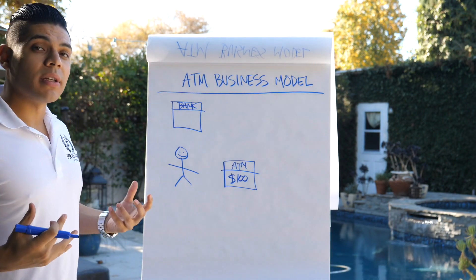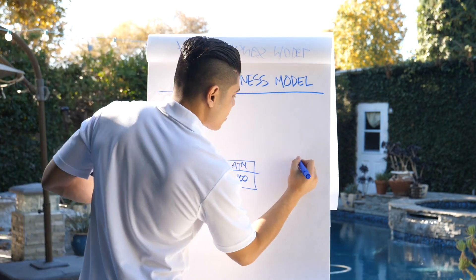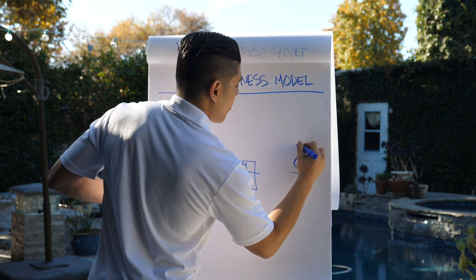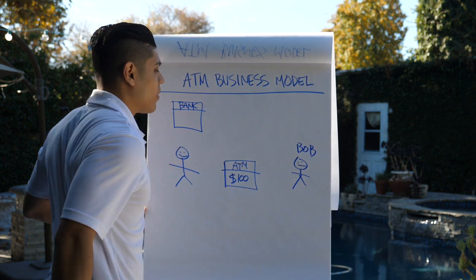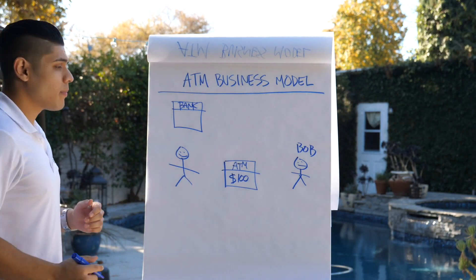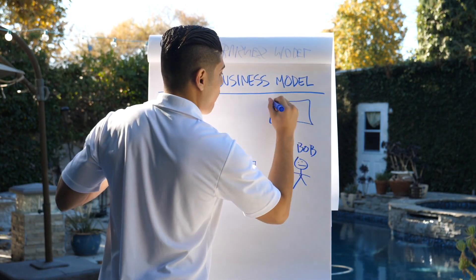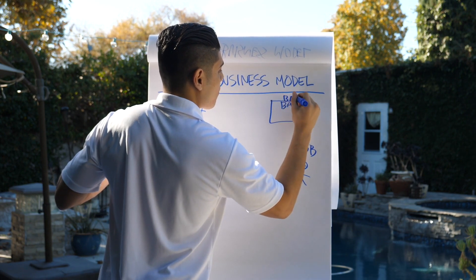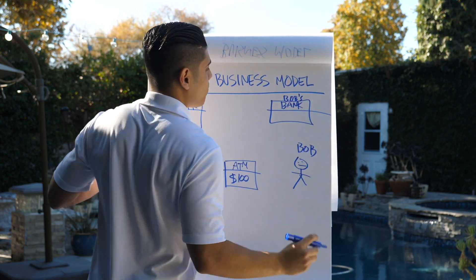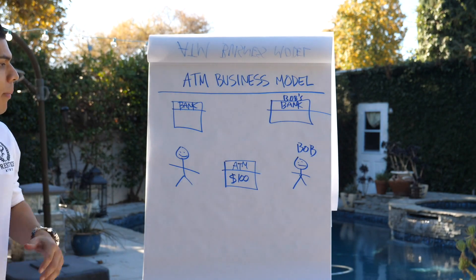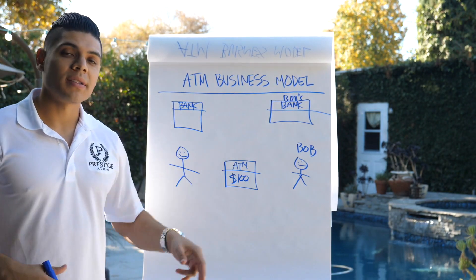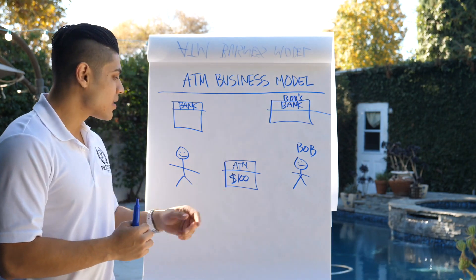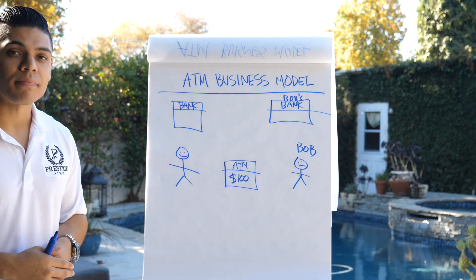You also need another thing in this equation: a customer to use your ATM machine. I'm going to call this guy Bob. Bob also has a bank as well — Bob's bank. Bob is a little upset because he left his house, he needs money, and he forgot to go to the bank.